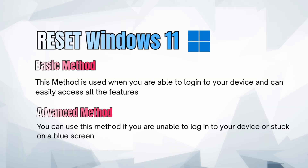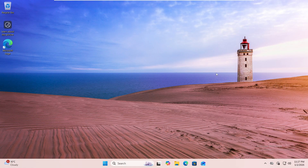There are two methods to factory reset your device. Number one is the standard method, which is applicable for all users who are able to boot into their Windows 11 device. The second one is the advanced method, only for users who are not able to boot into Windows 11 and are stuck on the blue screen or any advanced options screen.